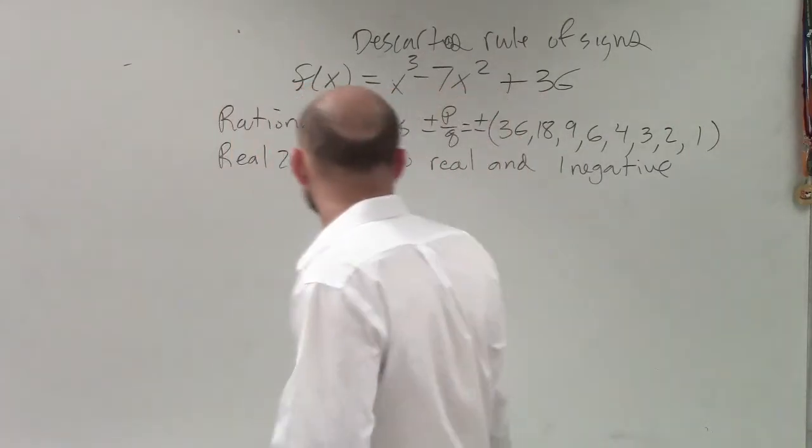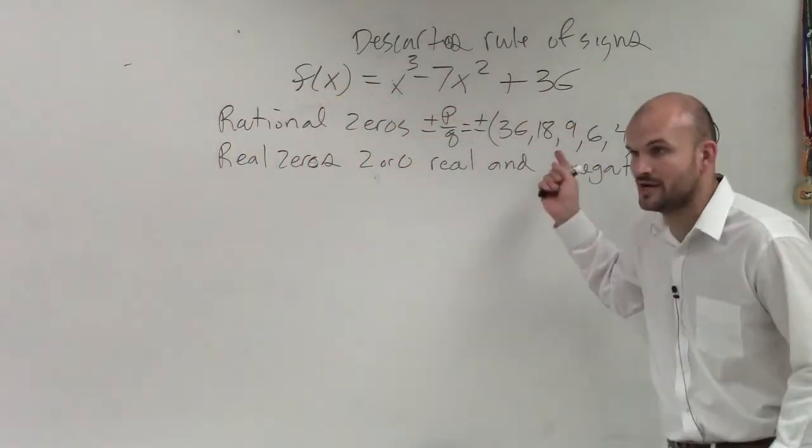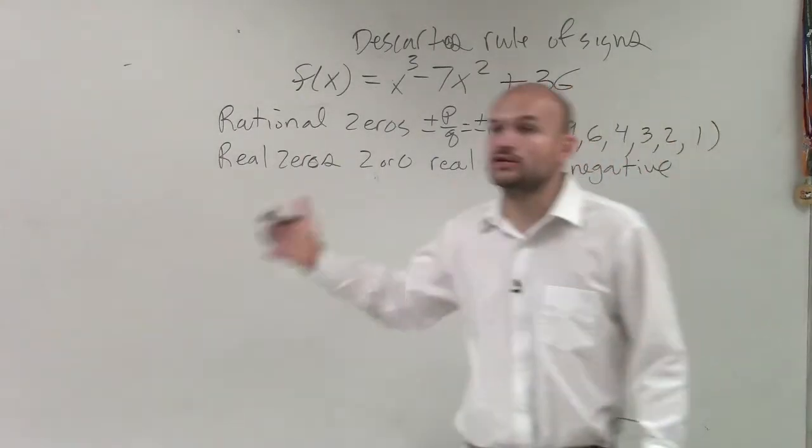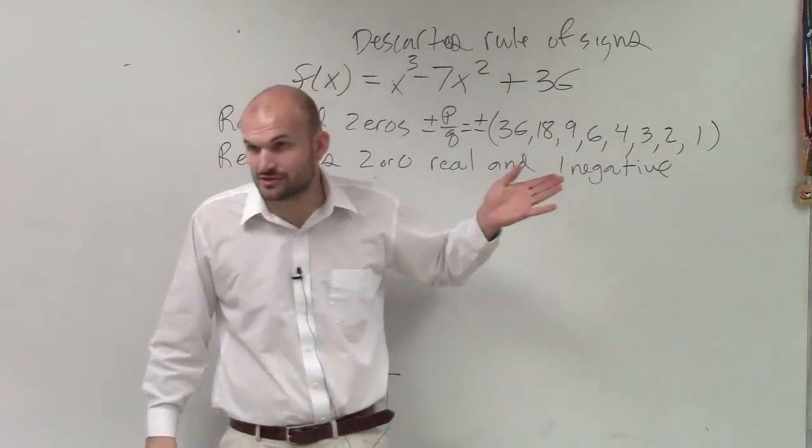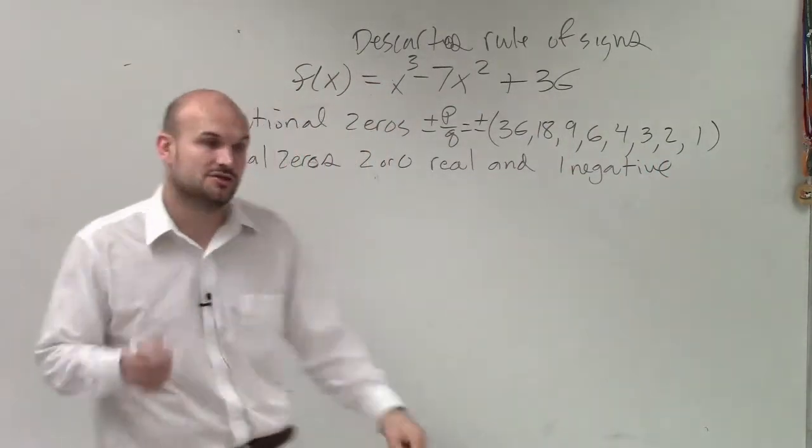Now, are you just going to pick any number? Are you going to want to pick 5? We already talked about this. You don't want to pick 5, because we already know 5 is not a rational number that's listed on the possible rational numbers. Now, there's two ways you guys can determine this.